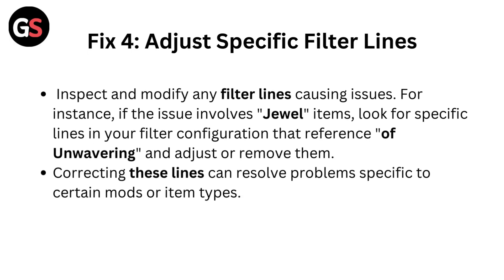Fix 4: Adjust specific filter lines. Inspect and modify any filter lines causing issues. For instance, if the issue involves certain items, look for specific lines in your filter configuration that reference unwavering, and adjust or remove them. Correcting these lines can resolve problems specific to certain modes or item types.